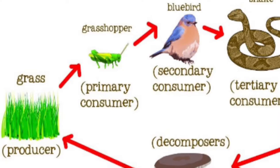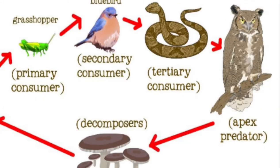In the food chain, there are producers, primary consumers, secondary consumers, tertiary consumers, and the decomposers.